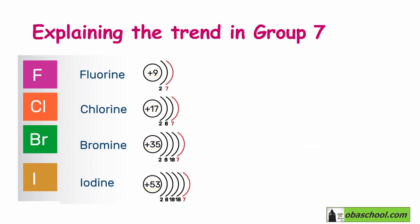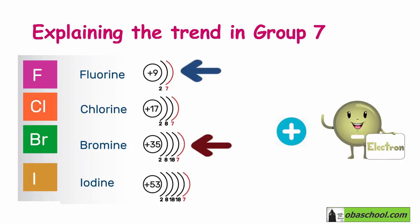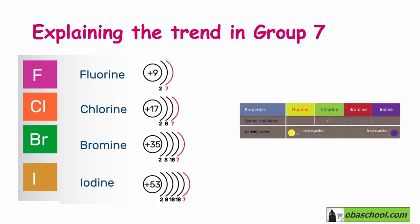So this means that it will be harder for bromine to gain an electron compared to fluorine. So iodine will be less reactive than bromine, bromine will be less reactive than chlorine, and chlorine will be less reactive than fluorine.